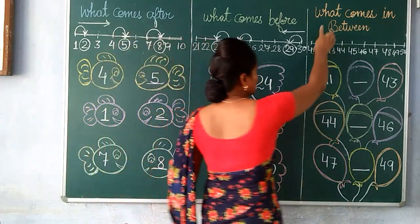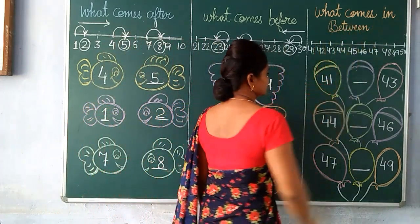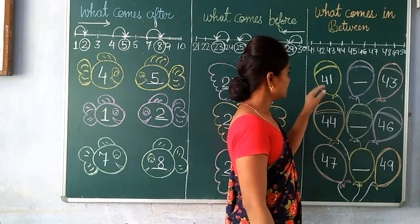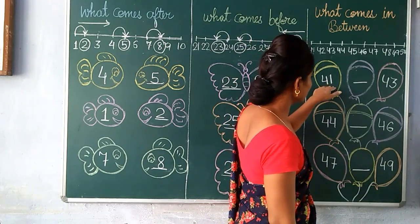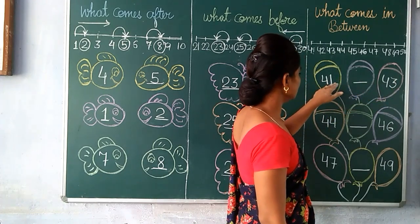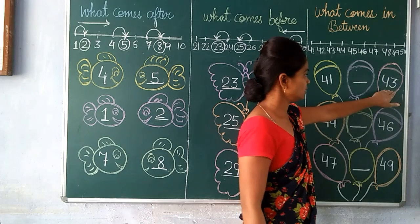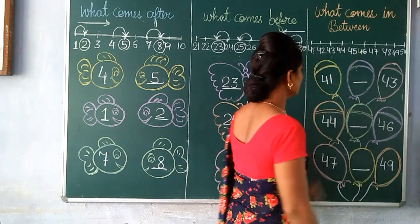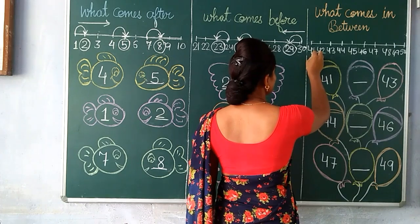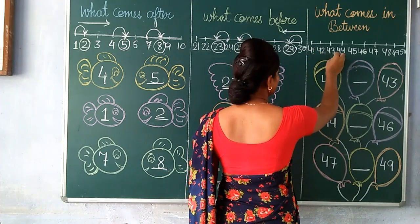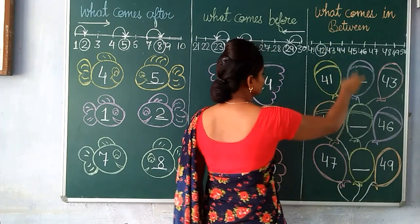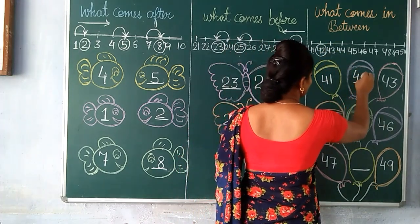Next is what comes in between. We will find out what comes in between. Here the numbers are 41 and 43. What comes in between 41 and 43? Yes, it comes 42. We will write here 42.